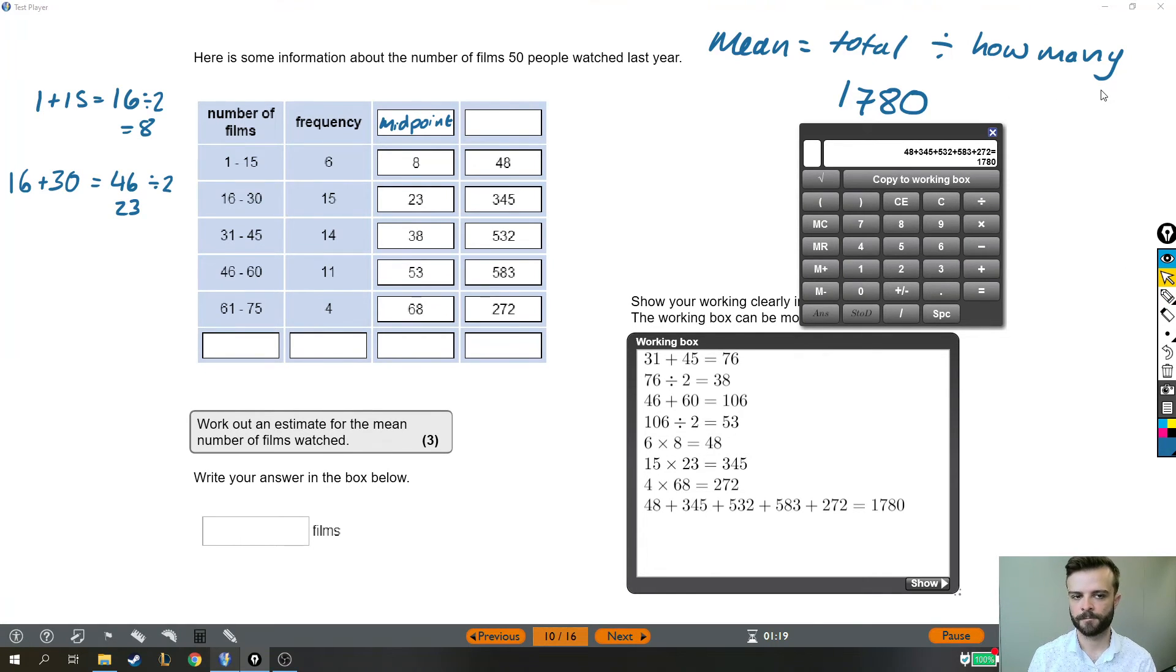So now I need to divide by how many. But how many is really vague, like how many what? How many films? How many categories? It should be dividing by how many people were asked. Now, if I didn't have that information, I could add up all of these, because this is the number of people that were asked. But often, like in this question, it does tell you how many people are in this survey altogether. There were 50 people. So if a total of 1780 films were watched by 50 people, then the mean number of films is the total number of films divided by how many people. So it's 35.6 films. That is the mean.